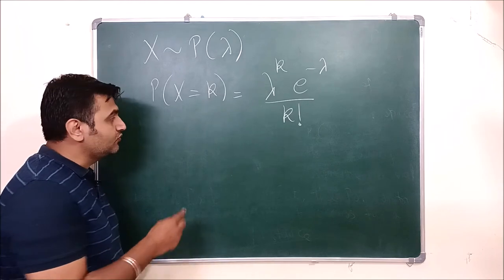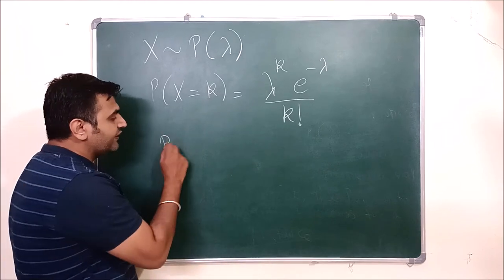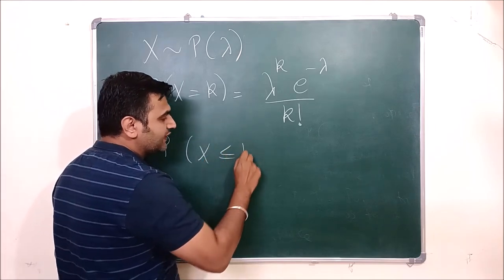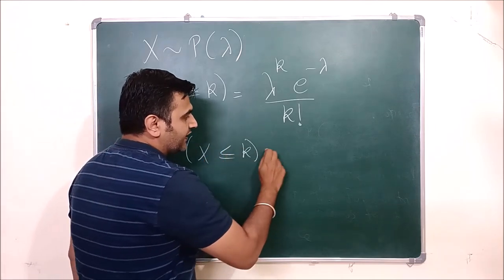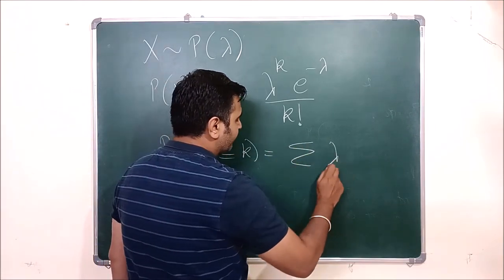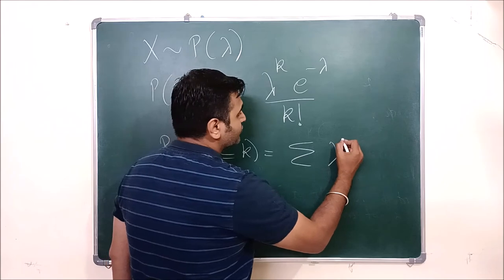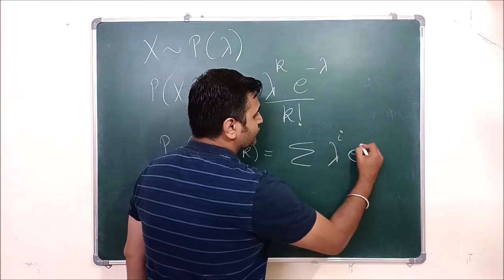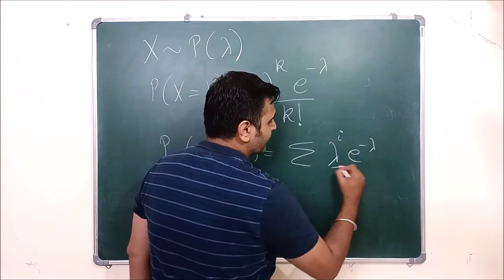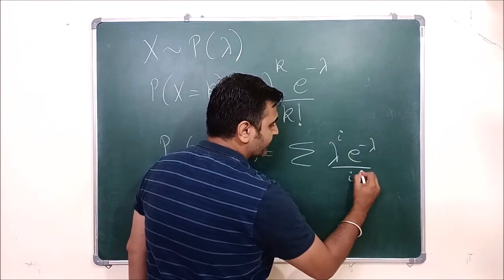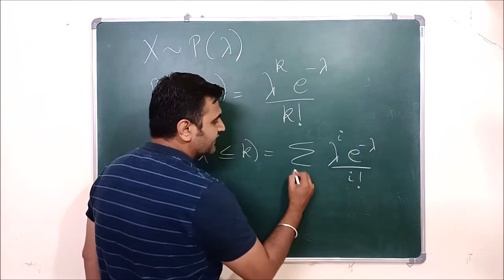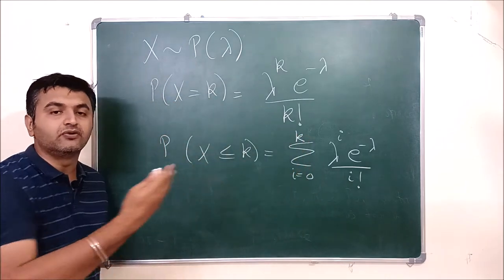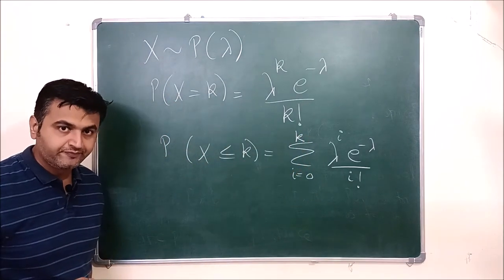For the cumulative distribution, the probability that X is less than or equal to K is the summation of lambda raised to i, times e raised to minus lambda, divided by i factorial, where i goes from 0 to K.